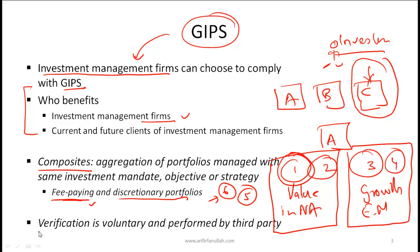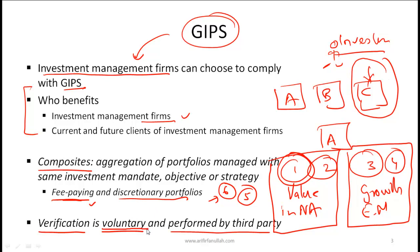Another general point has to do with verification. A firm can claim to be GIPS compliant, and in addition to that claim, it can choose to get verified by a third party. Verification is again voluntary and must be performed by a third party. The benefit to an investor is that if an independent third party has verified the GIPS compliance, that is a positive, and investors will see that favorably.